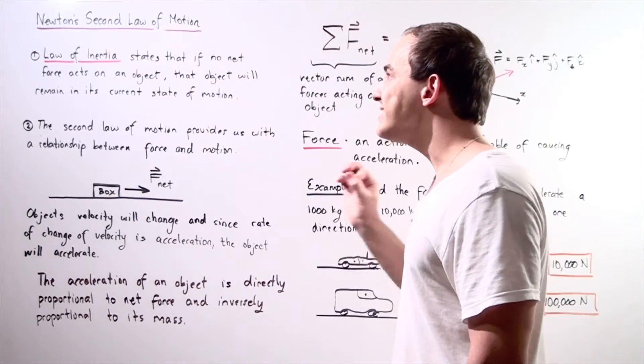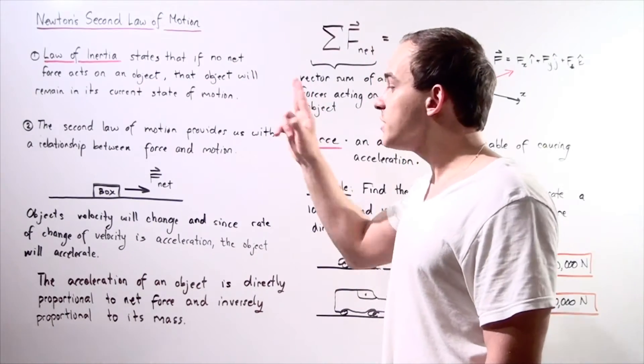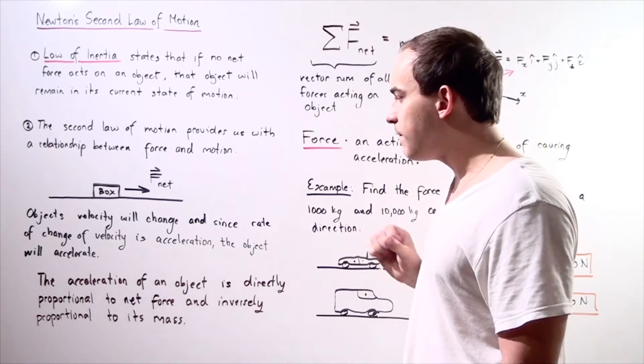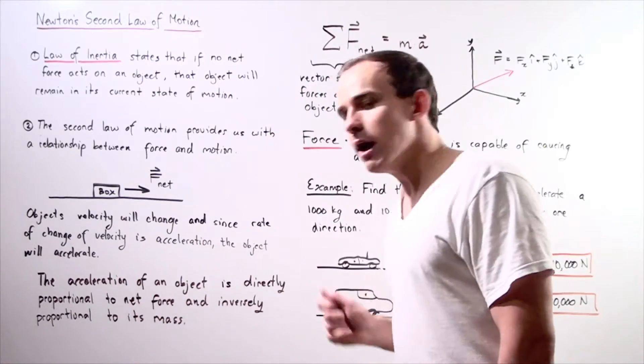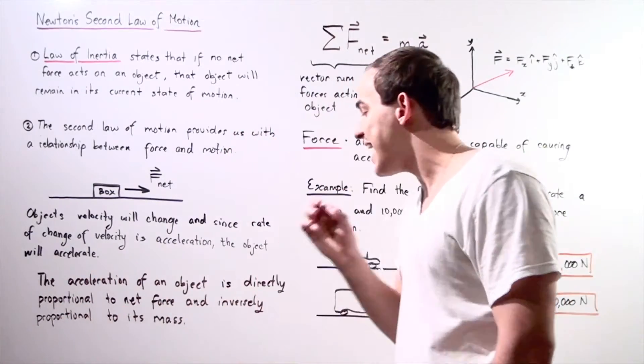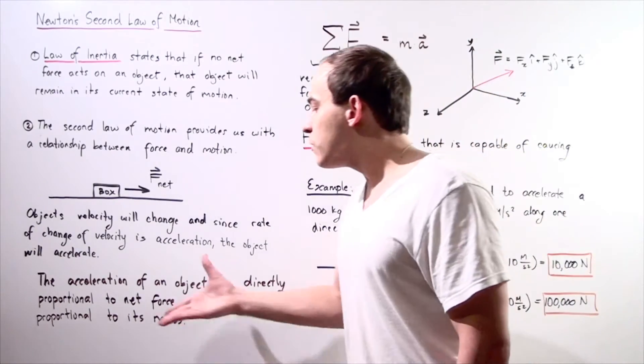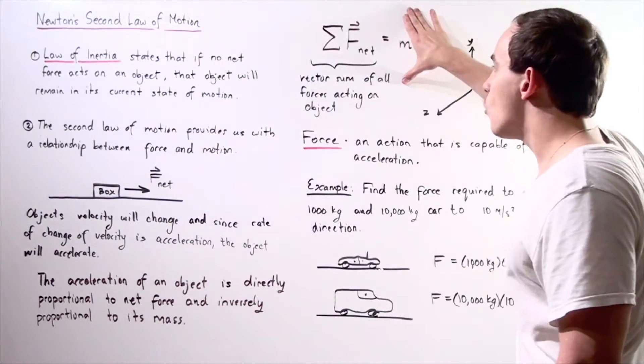So what exactly does the second law of motion state? The second law of motion states the following: The acceleration of an object is directly proportional to net force and inversely proportional to mass. This gives the following formula.